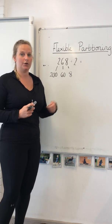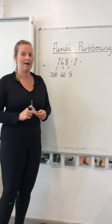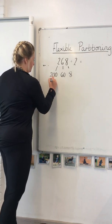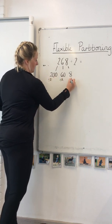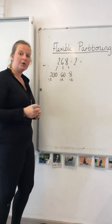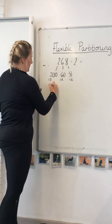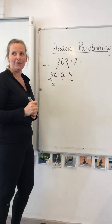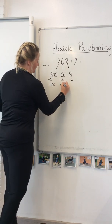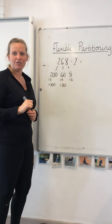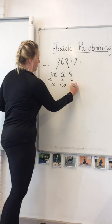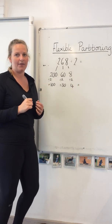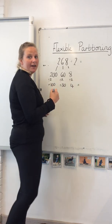You might also be able to just look at the number and be able to do this. So 200 divided by 2 is 100, 60 divided by 2 is 30, and 8 divided by 2 is 4. We can then bring all those numbers back together to find our answer.